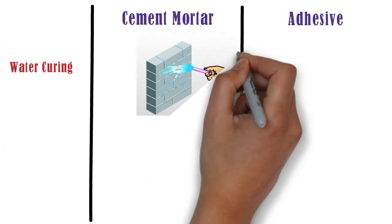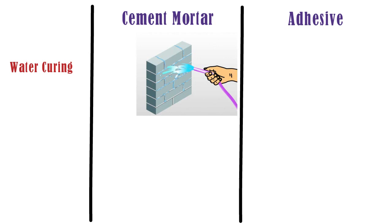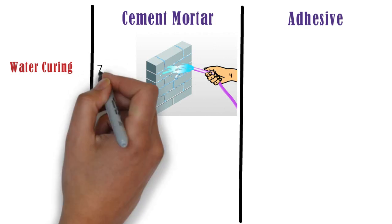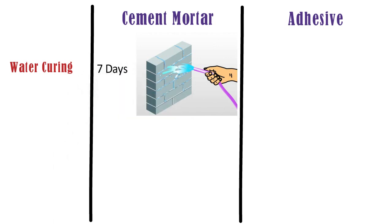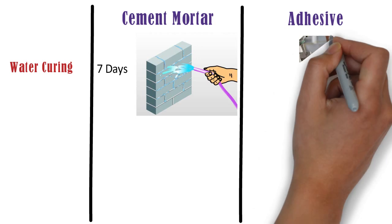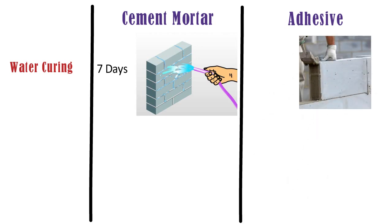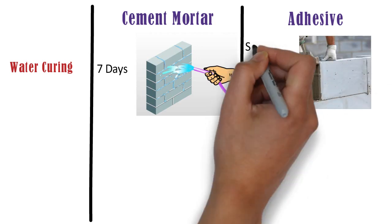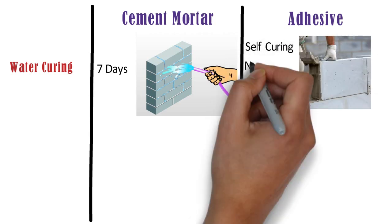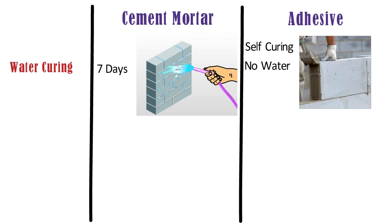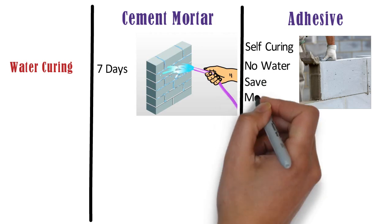In case of cement sand mortar, water curing is required for a duration of 7 days. Whereas, adhesives are formulated such that they are self-curing — no water is needed for curing the adhesive. Hence, they help in saving water as well as money.